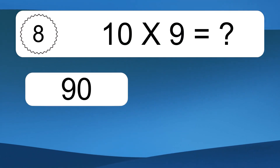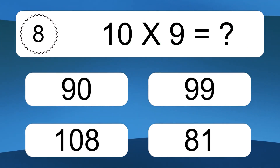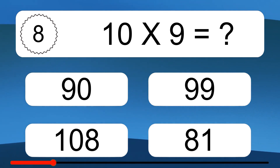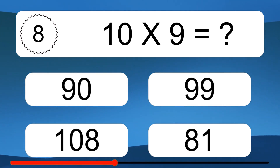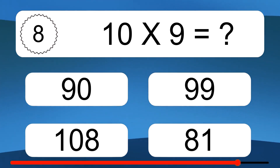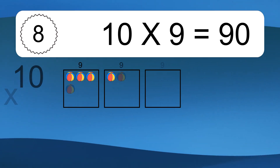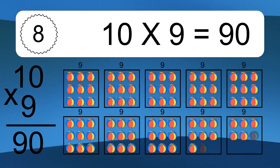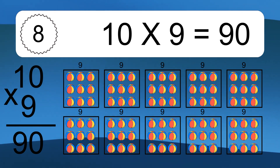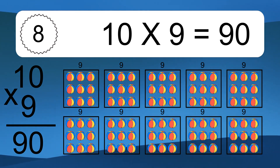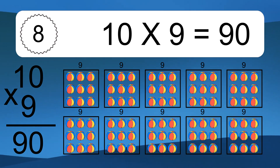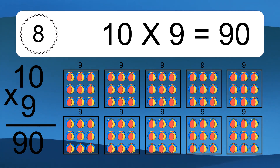10 times 9 equals what? 10 times 9 equals 90. We have 10 boxes, and each box has 9 colorful balls inside. If you count all the balls in all the boxes together, you will have 10 times 9 balls. This equals 90 balls.